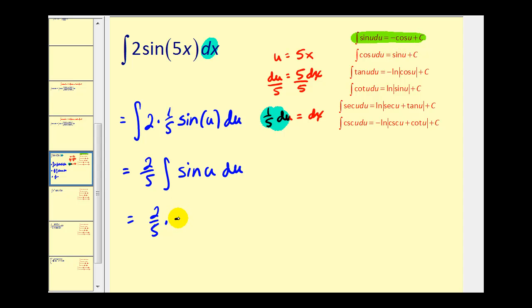So we'll have negative cosine u, but u is 5x plus C. So the result is -(2/5) cos(5x) + C.